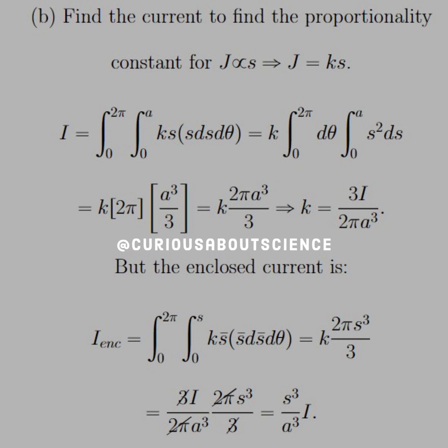All right, so moving forward. For part B, what we have to do is find the proportionality constant since we know that J is proportional to S, the distance away from the center axis, which says that J is equal to KS. So we need to find the current in order to find what this constant is, and then we can find what the current density is for any enclosed region. So I is equal to the integral, in this case double integral, since it's the volume over a surface, volume current density over a surface.